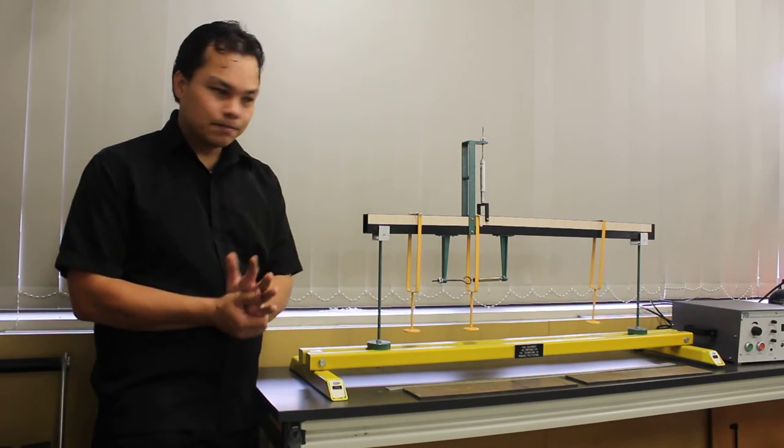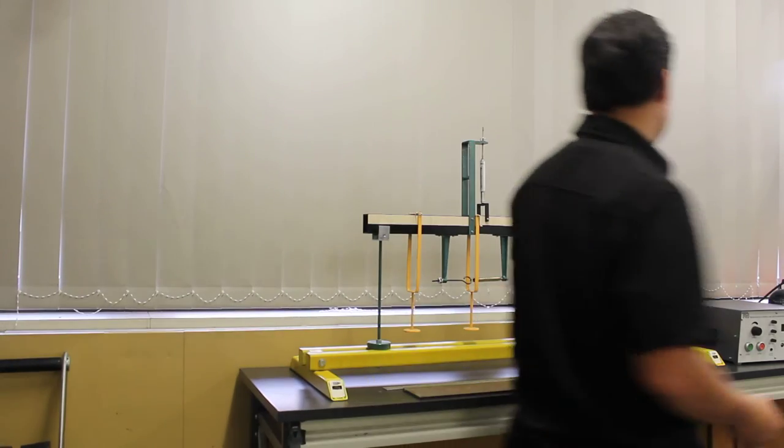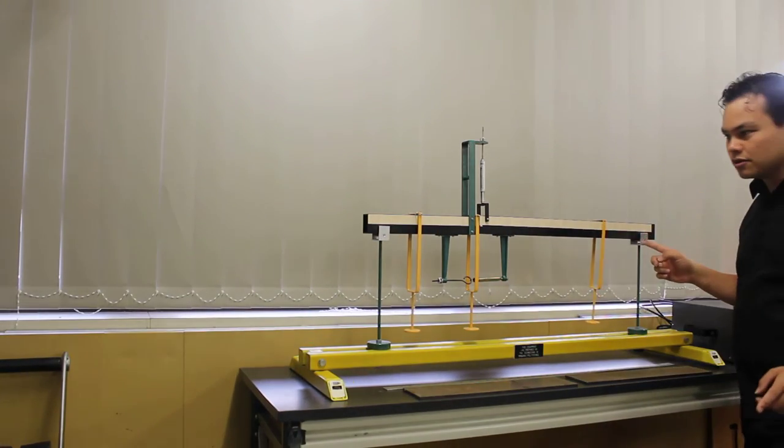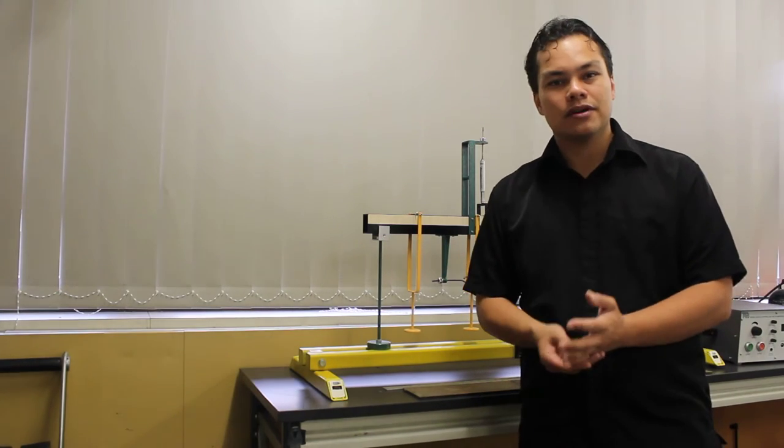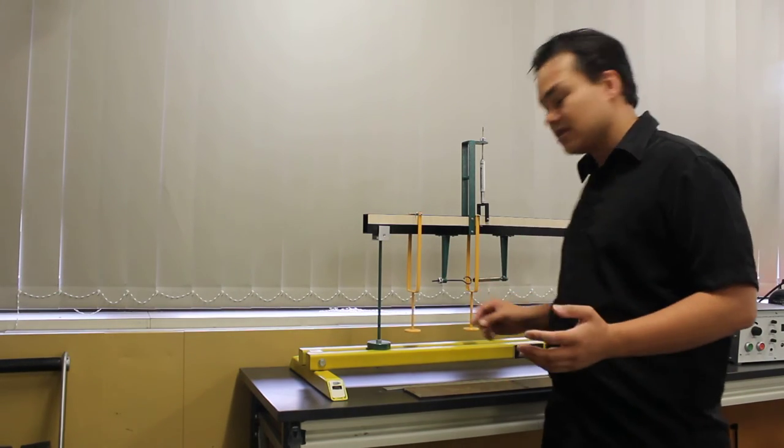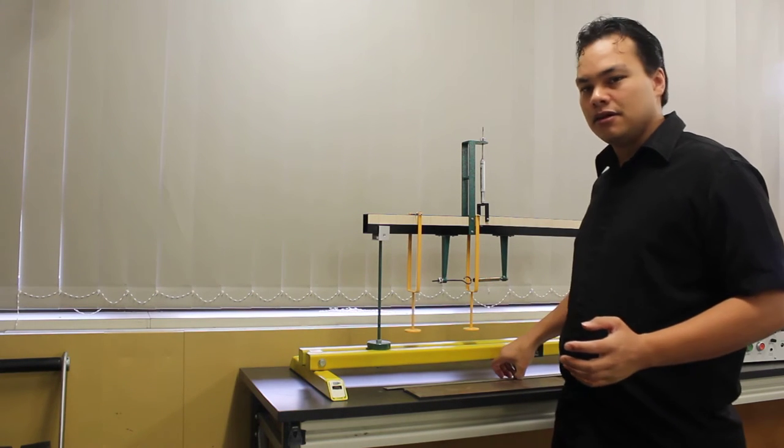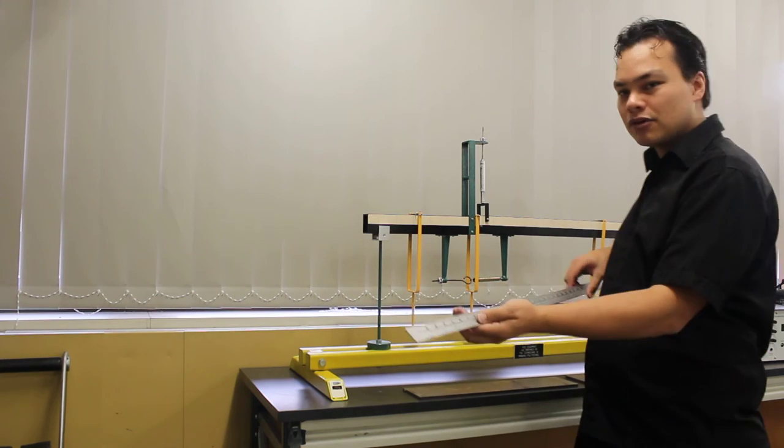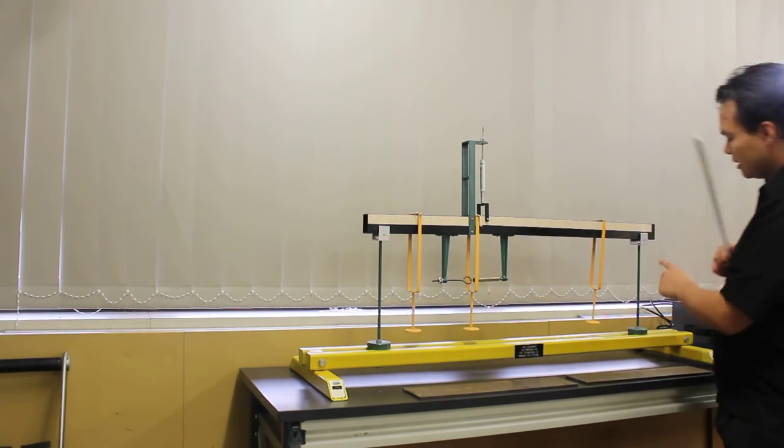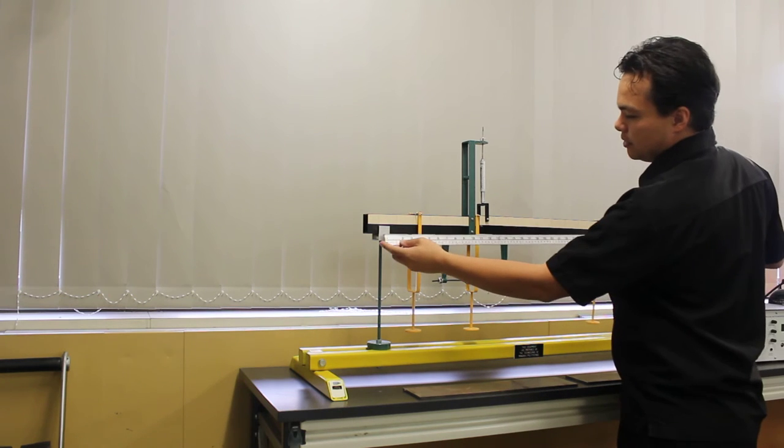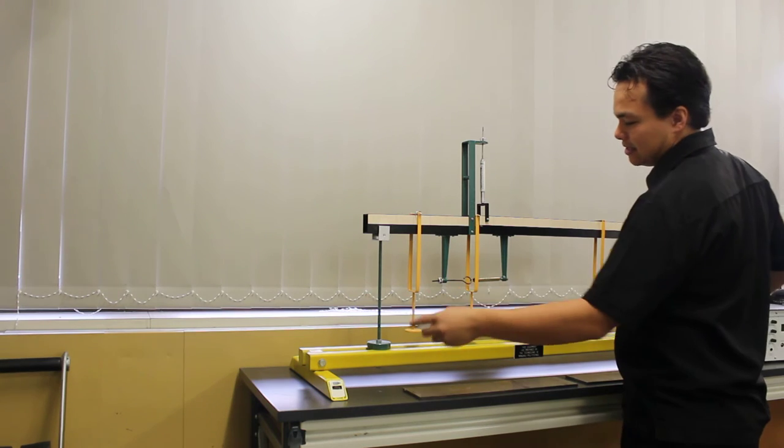Our second step is to check that the distance between the right hand support and the left hand support is exactly 0.9 meters. This is to match the data which is in your lab sheet. So we can take a ruler, measure between the pins at these two points using our ruler and we get 90 centimeters.